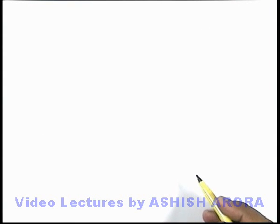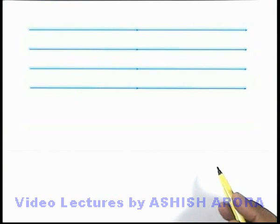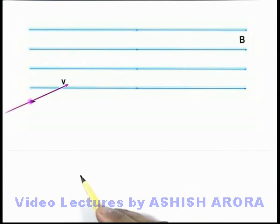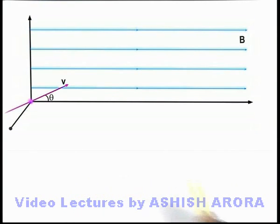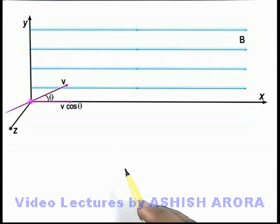In continuation, let's discuss a realistic situation where we can practically understand how the helical path is followed. Here we can see this is a uniform magnetic field in the region which exists from left to right. From the left side, a charge plus q enters into it with a velocity vector v. For reference, we consider the point where the charge enters the magnetic field as the origin, the horizontal direction as the x-axis, the vertical direction as the y-axis, and the outward direction as the positive z-axis. The horizontal component of velocity v cos theta means the particle will not experience any force.